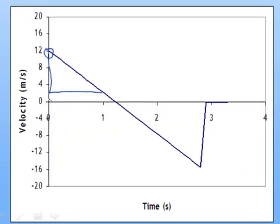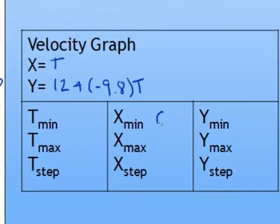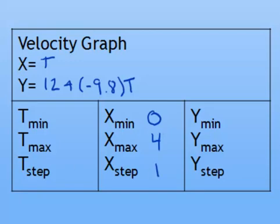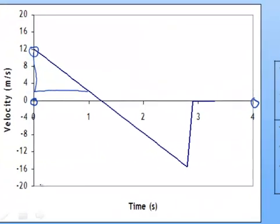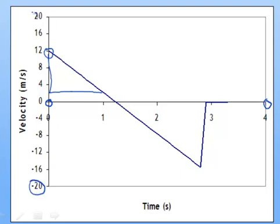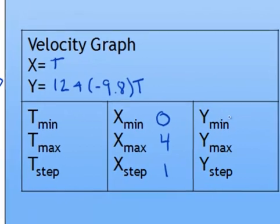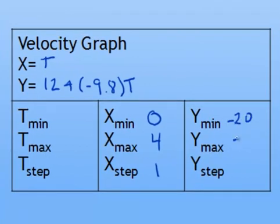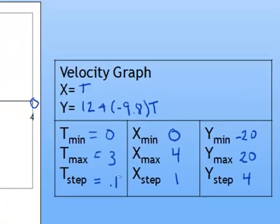And the Y values look like they range from negative 20 to positive 20 by 4s. And our time settings should work fairly well, going from 0 to 3 by tenths. Since it's the same scenario, just a different type of graph.